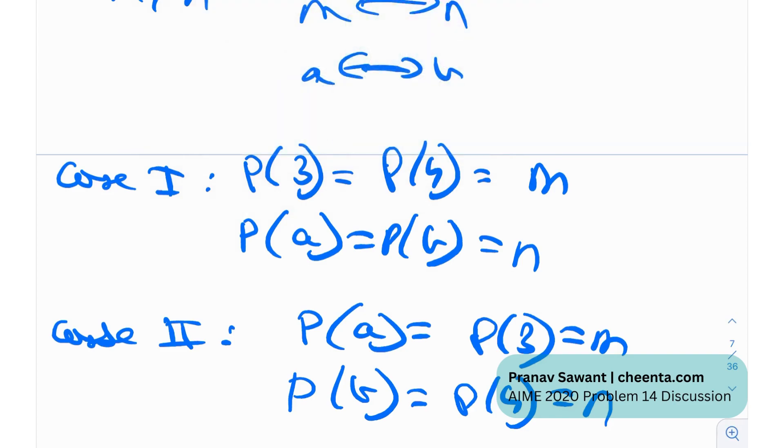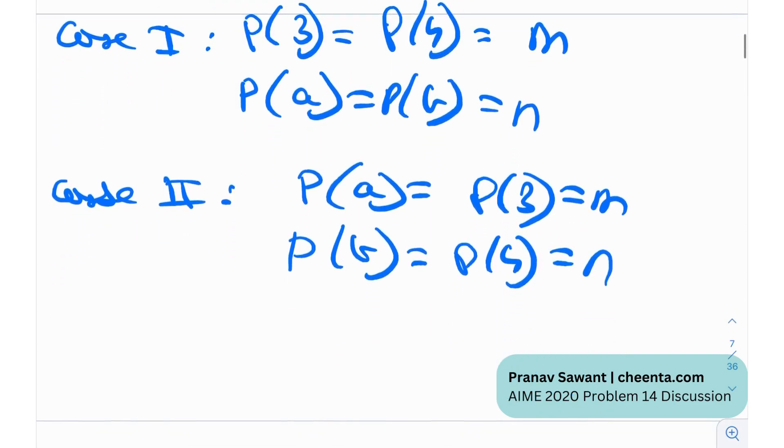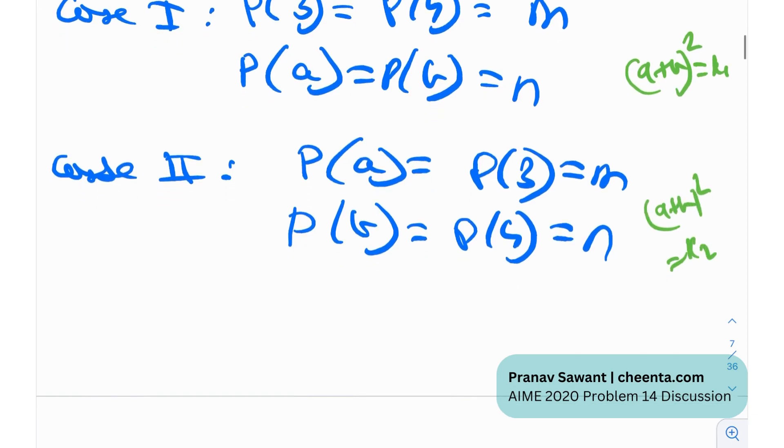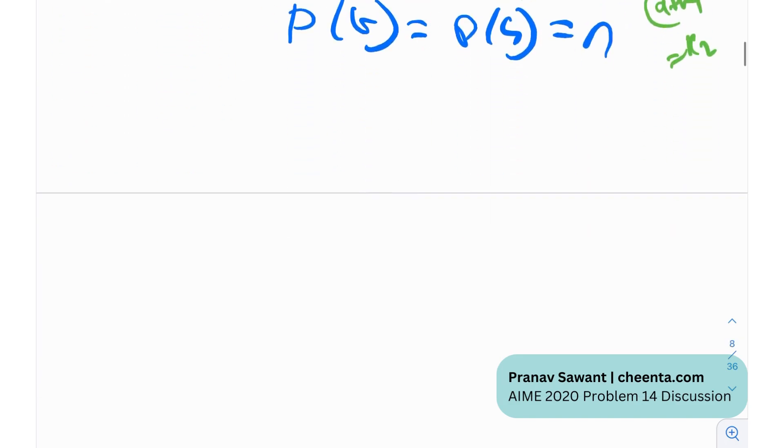Now what are we going to do after that? We're going to just examine both of the cases one by one, and so we're going to get a value of a plus b squared from here, let's say k1, and a value of a plus b squared equal to k2 from here, and we need to find the sum of values of these, k1 plus k2 essentially. Okay, let's just examine case one.